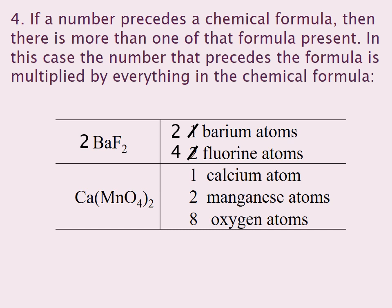In calcium permanganate, I have 1 calcium atom, 2 manganese atoms, and 8 oxygen atoms. If I placed a 3 in front of there, that would give me 3 calcium permanganate crystals. So 1 calcium atom would become 3, 2 manganese atoms would become 6, and 8 oxygen atoms would become 8 multiplied by 3, which would give me 24 oxygen atoms.